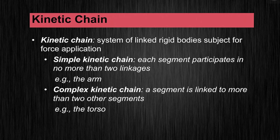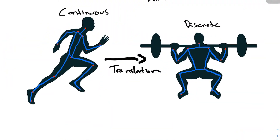A kinetic chain is a system of linked rigid bodies subject to force application. We think of these segments and the links between them — joints — as being subject to forces. In a simple kinetic chain, each segment participates in no more than two linkages, such as your arm, your leg, or a single joint with two segments on either end. A complex kinetic chain has a segment linked to more than two other segments — for instance, the torso, which is linked to two shoulder joints and two hip joints, making it complex.